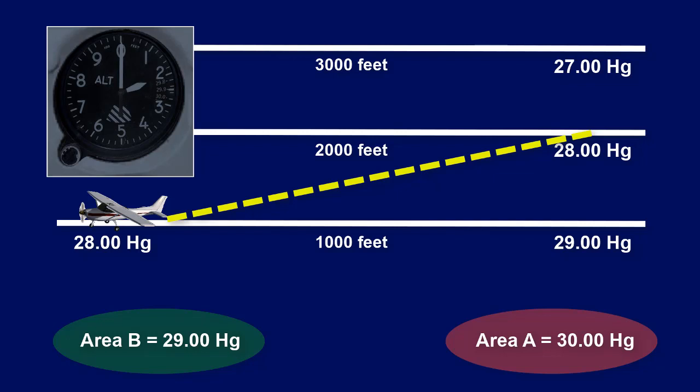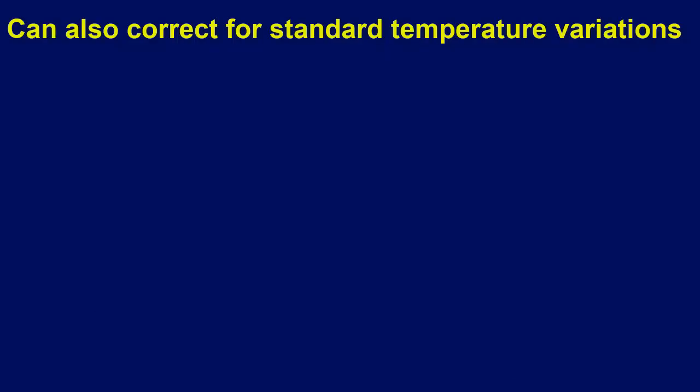You are 1,000 feet lower than where you think you are and don't even know it — not good if there are obstacles ahead. To make the altimeter even more accurate, you can also correct for non-standard temperature variations. Most pilots don't correct for these in normal conditions, but in extreme conditions you would use a flight computer to help with these calculations.